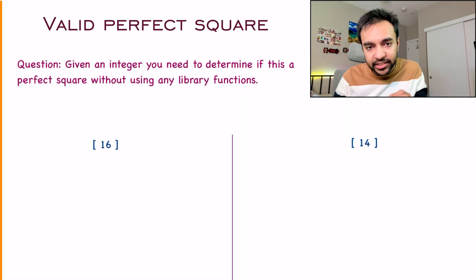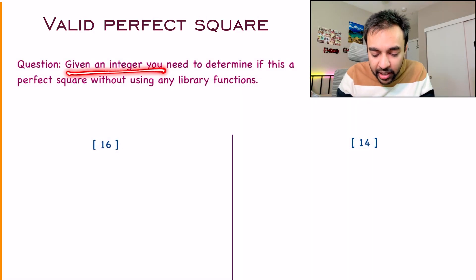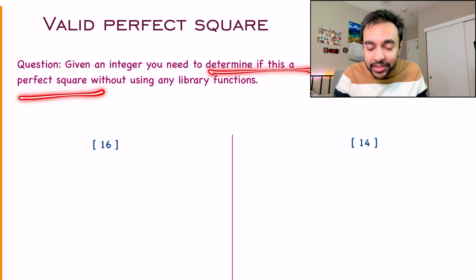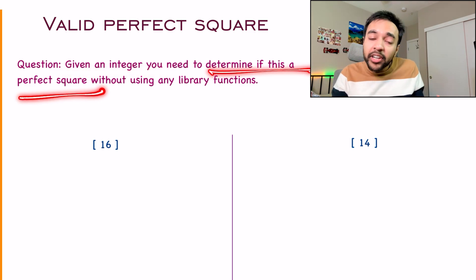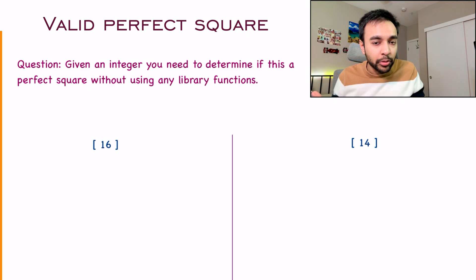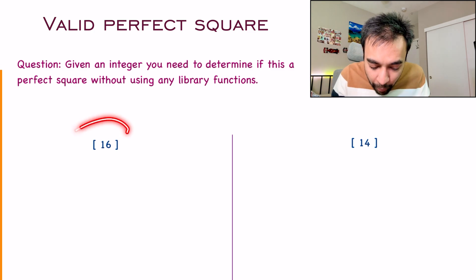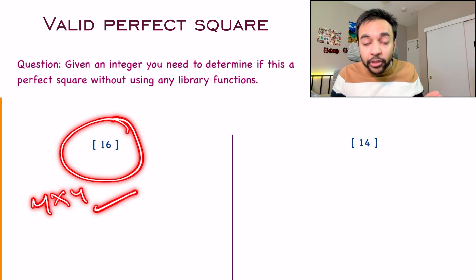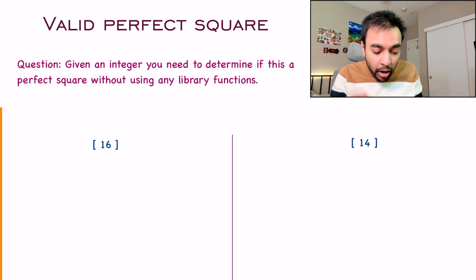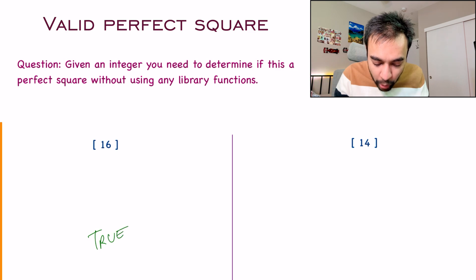The problem statement is actually very straightforward. You are given an integer and you have to determine if this is a perfect square. A perfect square is a number which is obtained by multiplying an integer with itself. So like 2 into 2 is 4, so 4 is a perfect square. 10 into 10 is 100, so 100 is a perfect square. You cannot multiply two decimal values to get a perfect square. For example, I have my first test case over here, it is 16. You know that you can get 16 by 4 into 4, so this is a perfect square. So for the first test case, you need to return true as your answer.